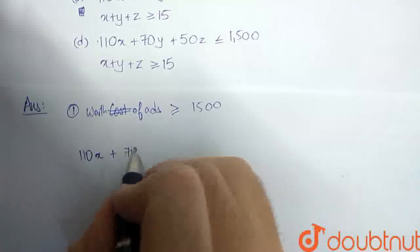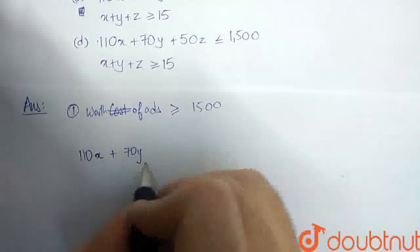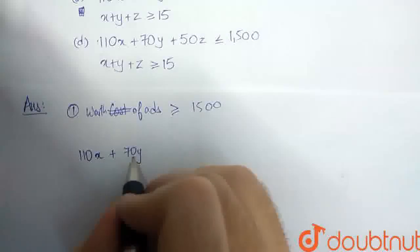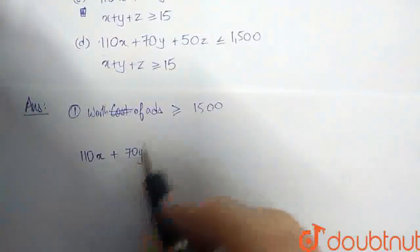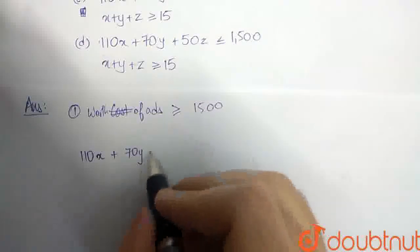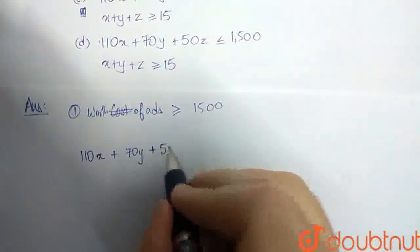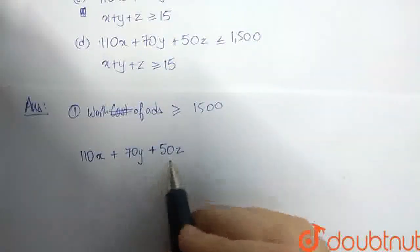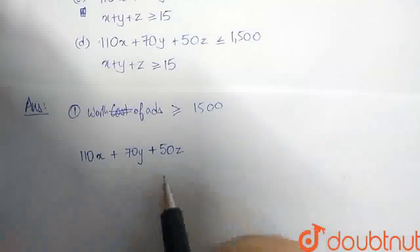Similarly, 70y gives us the total cost of half-page ads. $70 is the cost of one half-page ad, and y is the number of half-page ads she sells. Next, we have 50z. $50 is the cost of one quarter-page ad, and z is the number of quarter-page ads that she sells.